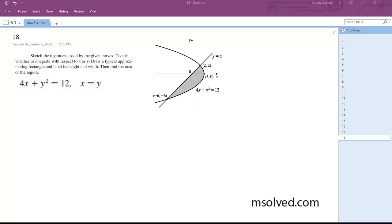Alright, so let's find the intersection points first. To do that, simply we're going to use x, so we're going to have 4x is equal to 12 minus y squared. Divide by 4, we get x is equal to 3 minus 1/4 y squared.